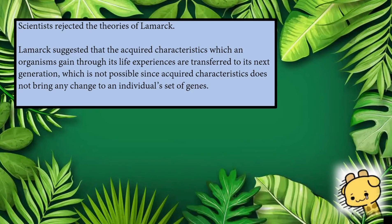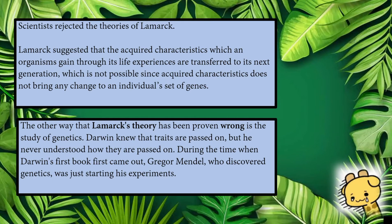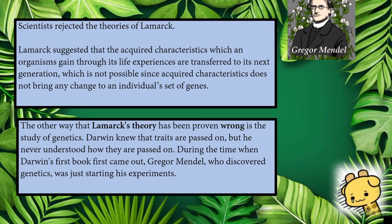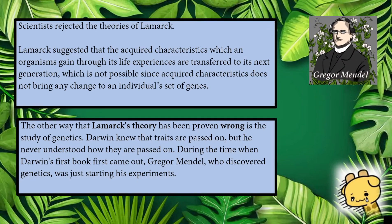Scientists rejected the theories of Lamarck. Lamarck suggested that acquired characteristics which an organism gained through its life experiences are transferred to its next generation. This is not possible since acquired characteristics do not bring any change to an individual's set of genes. Lamarck's theory has also been proven wrong through the study of genetics. Darwin knew that traits are passed on, but he never understood how they are passed on. During the time when Darwin's first book came out, Gregor Mendel, who discovered genetics, was just starting his experiments.